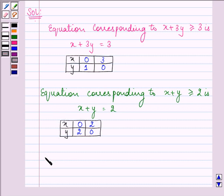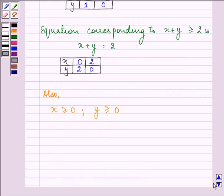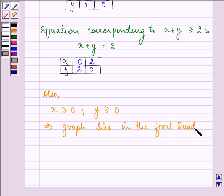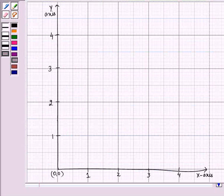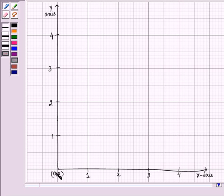Also, we know that since x is greater than or equal to 0 and the value of y is also greater than or equal to 0, this implies that the graph lies in the first quadrant. Now let us draw the graph for this.